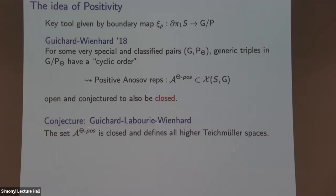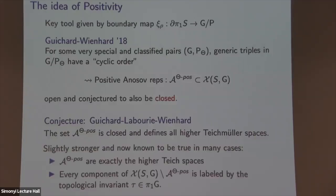A conjecture of Guichard, Labourie, and Wienhard is that the set of positive Anosov representations is closed — this is the source of all higher-rank Teichmüller spaces. Slightly stronger, and true in many cases and expected in general: the set of positive Anosov representations exactly characterizes the higher-rank Teichmüller spaces, while the complementary components are all labeled by topological invariants. So not only are there higher-rank Teichmüller spaces, but no other unexpected ones arise.